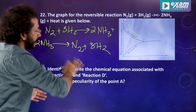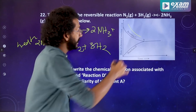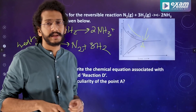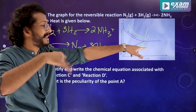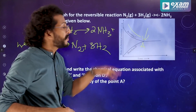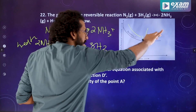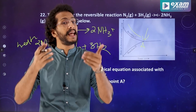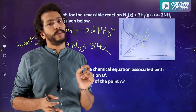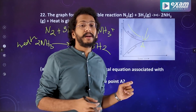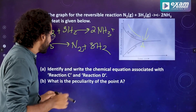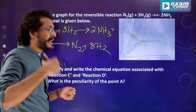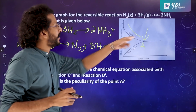What is the peculiarity of point A? At point A, the forward reaction rate and backward reaction rate are equal — that is equilibrium. The rate of the backward reaction equals the rate of the forward reaction at point A.